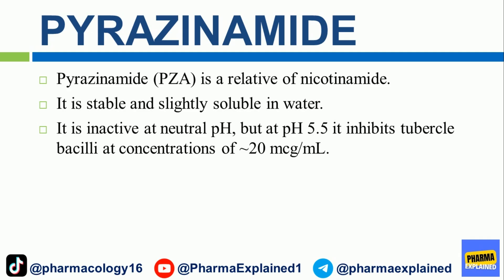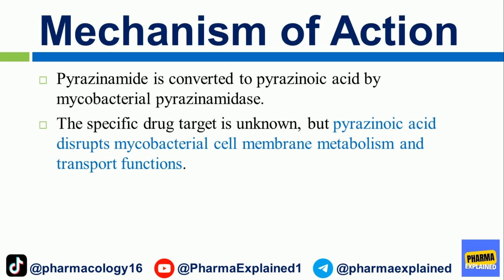Pyrazinamide (PZA) is a relative of nicotinamide. It is stable and slightly soluble in water. It is inactive at neutral pH, but at pH 5.5 it inhibits tubercle bacilli at concentrations of 20 mg/mL. Mechanism of Action: Pyrazinamide is converted to pyrazinoic acid by mycobacterial pyrazinamidase. The specific drug target is unknown, but pyrazinoic acid disrupts mycobacterial cell membrane metabolism and transport functions.